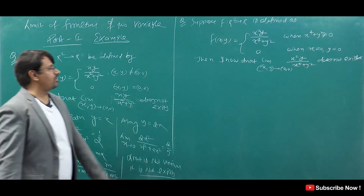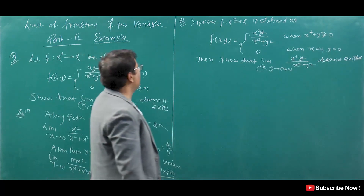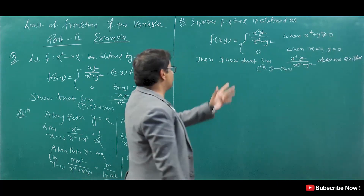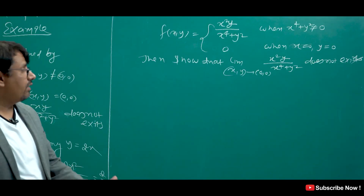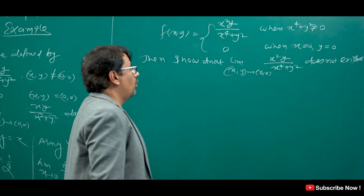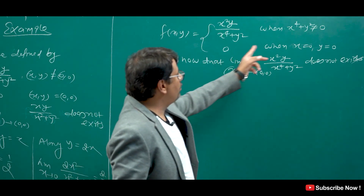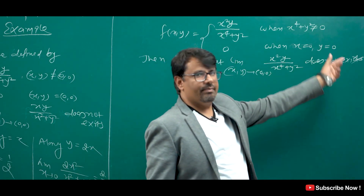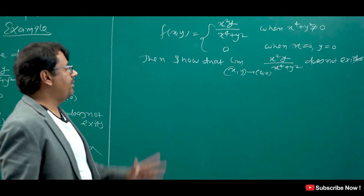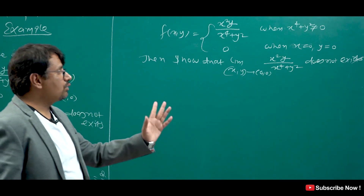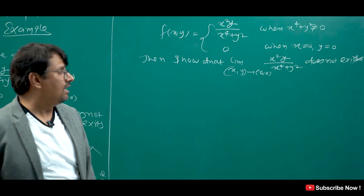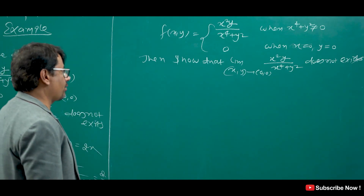Now suppose f: R² → R is defined as x²y/(x⁴ + y²) when x² + y² ≠ 0, and 0 otherwise. We have to prove that the limit as (x,y) → (0,0) of x²y/(x⁴ + y²) does not exist. This is a simple question — let us see how to approach it.